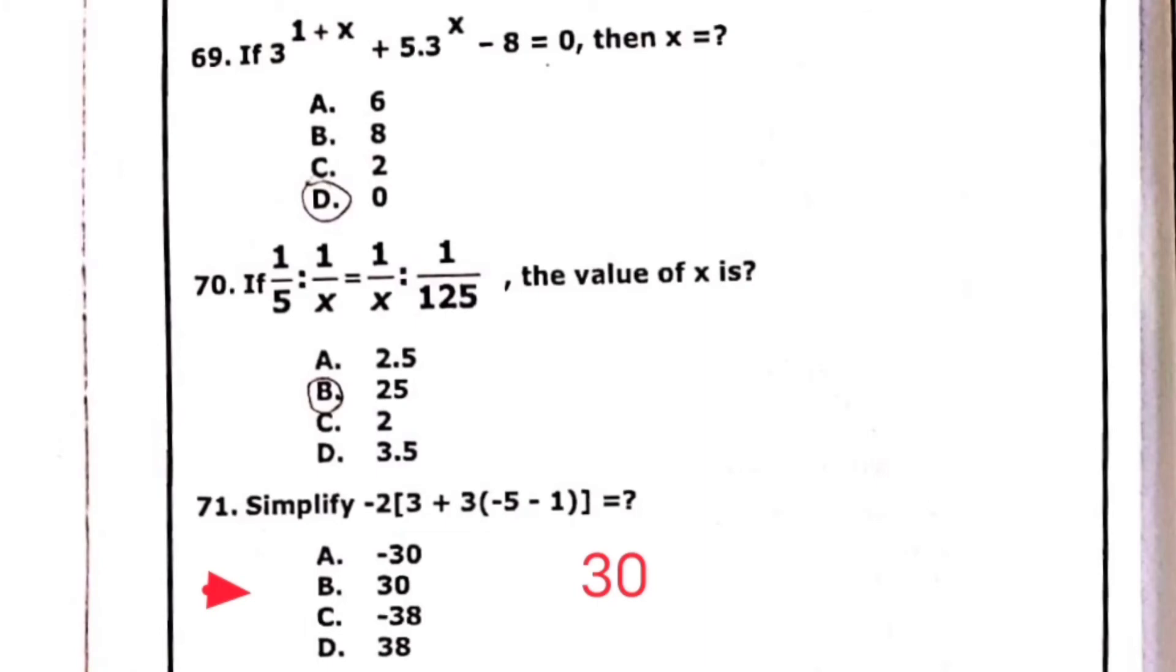Question 70: if 1 over 5 ratio 1 over x equals 1 over x ratio 1 over 125, then the value of x is 25. Simplify the given equation, answer is 30.